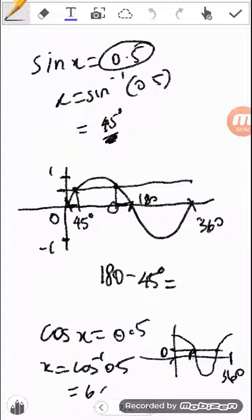It's 60 degrees. Then here, the first answer will be 60. The next answer will be 270 plus 60.